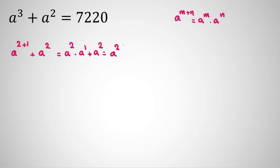Equals a squared. We can factor it: a squared times a plus 1 equals 7220. Now we want to factorize. We want to see can we find one root. It will be 10 times 722.